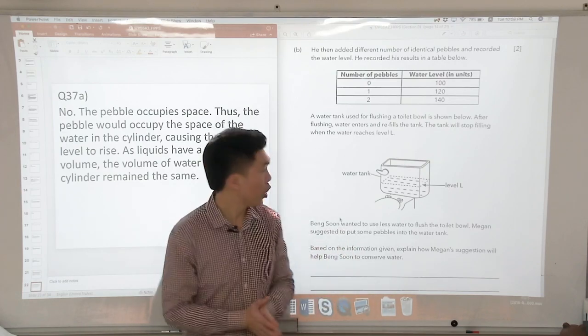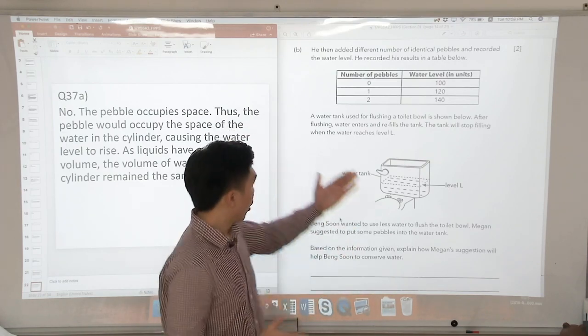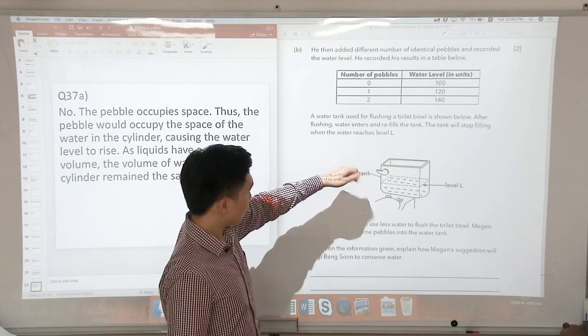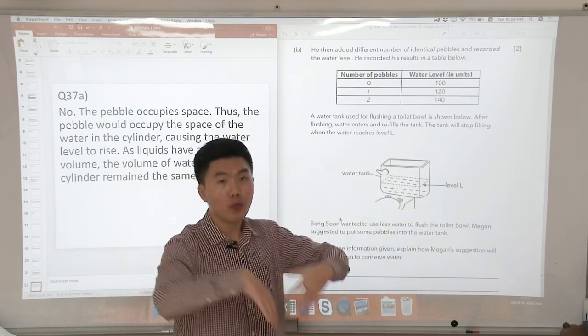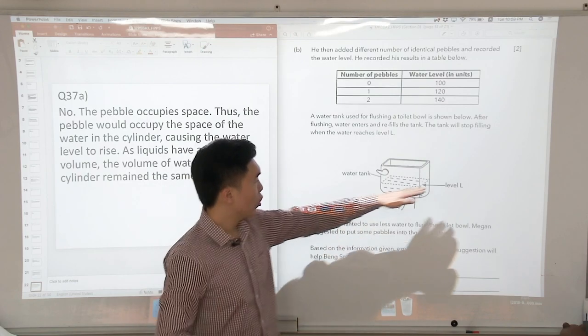So first of all, let us try to understand what this question is about. When the water is flushed, the water level will decrease and then the water will start to fill up the water tank to level L.